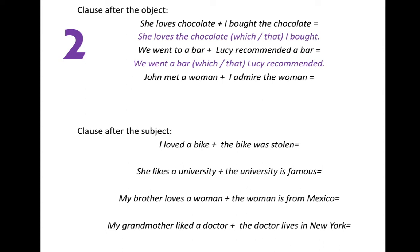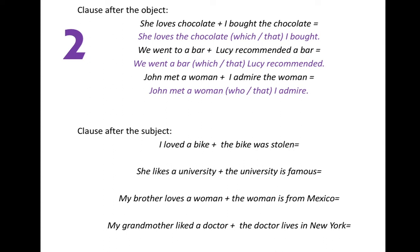Next: 'John met a woman' and 'I admire the woman.' Connecting them: 'John met a woman who — or that — I admire.' The relative pronoun 'who' is replacing 'the woman,' and 'the woman' is the object of the verb 'admire.' That means you can remove it — it's optional. Now: 'The police arrested a person who — or that — Jill worked with.'